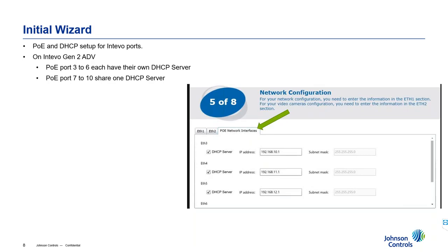Step five lets you deploy your PoE ports. The Interval Advanced comes with eight PoE ports and the Interval Compact comes with four. The Compact's four PoE ports are all configured under one DHCP server — they provide their own DHCP server directly. The Interval Advanced has eight PoE ports: the first four each have their own DHCP server with their own range of addresses — 10.1 range — and then the 11.1 range for the next group. The last four ports share one DHCP server, so those four ports share the same range of IP addresses.